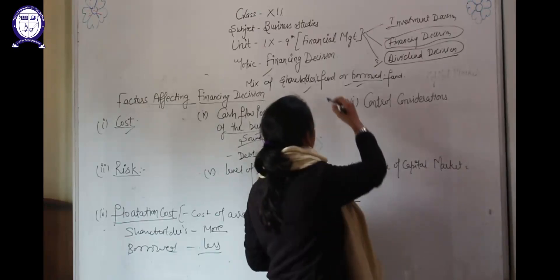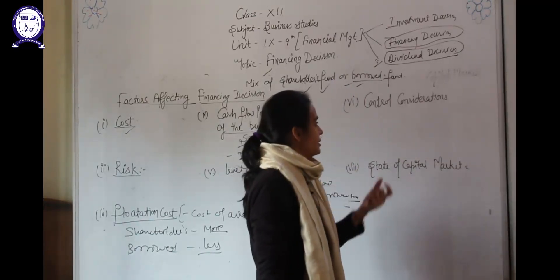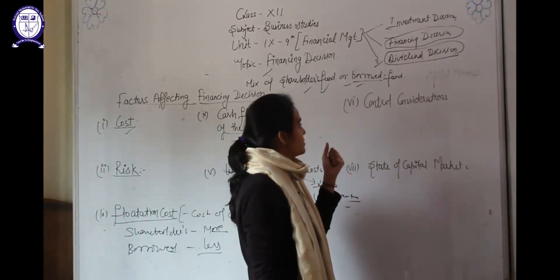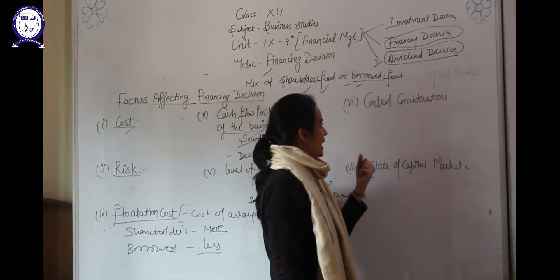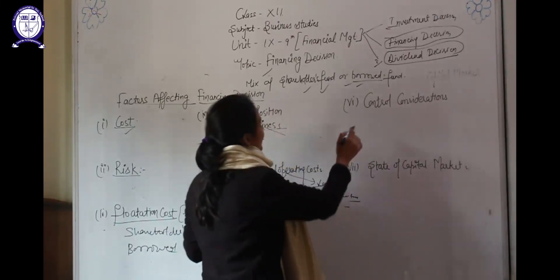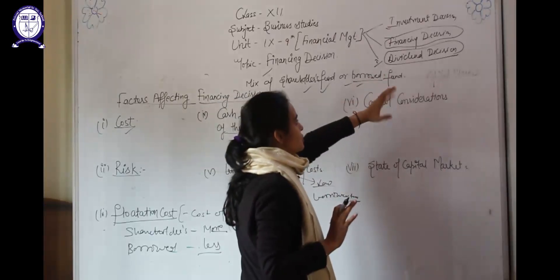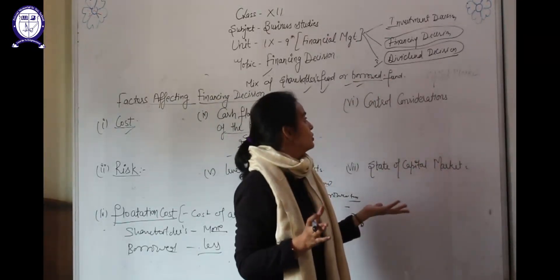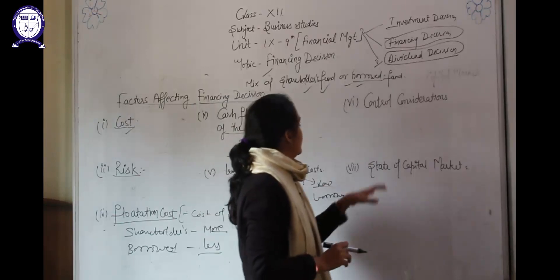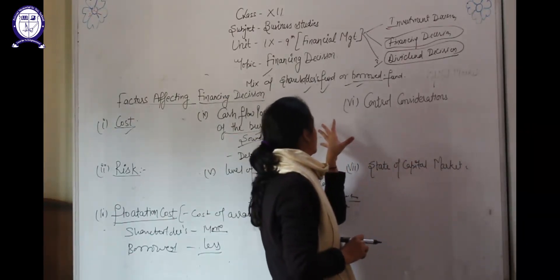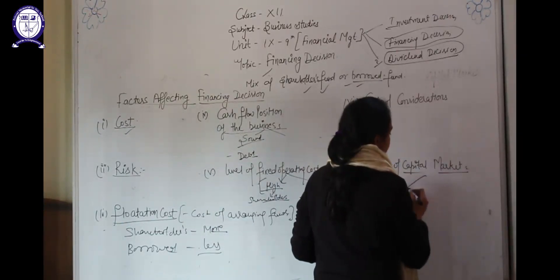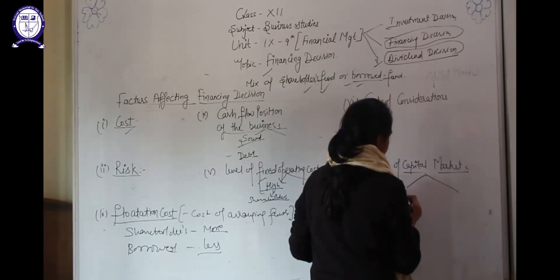Now, control consideration. As you have already studied, equity shareholders get voting rights whereas debenture holders don't get voting rights. If the company's strategy is to keep control in their own hands and they are not ready to dilute control, at that time the company should use borrowed funds because debenture holders don't get voting rights and will not participate in board meetings or decision-making. If the company is ready to dilute control, then the company should use shareholder funds.